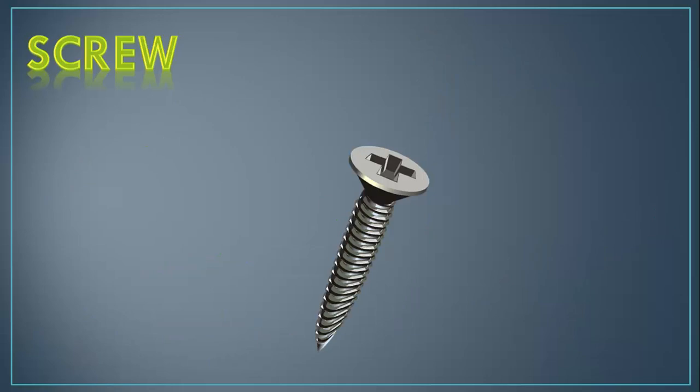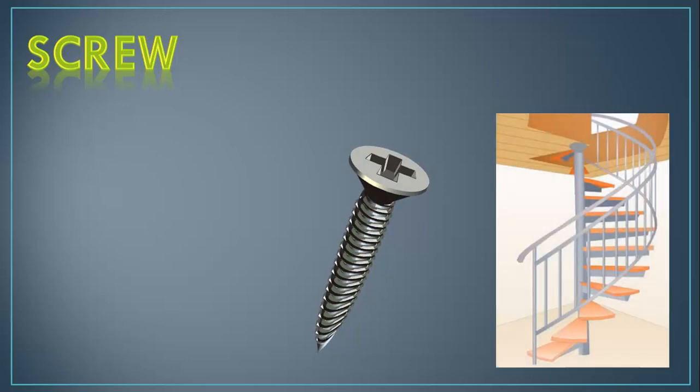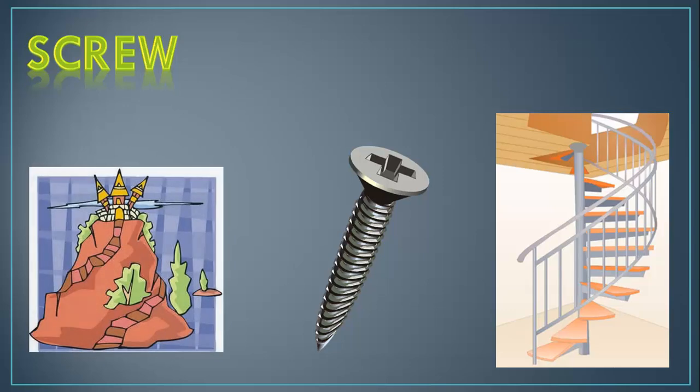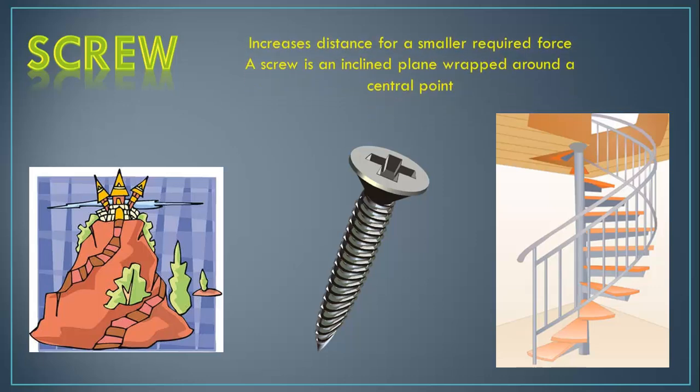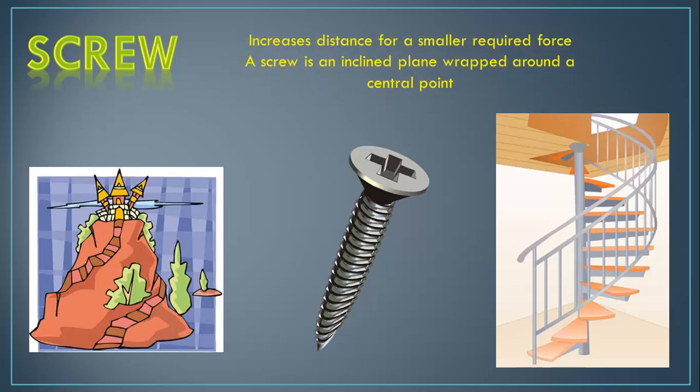The screw is the next type of simple machine. And a screw is simply just that, what you picture in your head when you think of the word screw. We also have examples such as a spiral staircase, or even a road wrapping around a mountain to get to the top, as in this example with the castle. A screw increases distance so that you require a smaller amount of force. And in the case of a screw, it's simply an inclined plane, or ramp, wrapped around a central point.